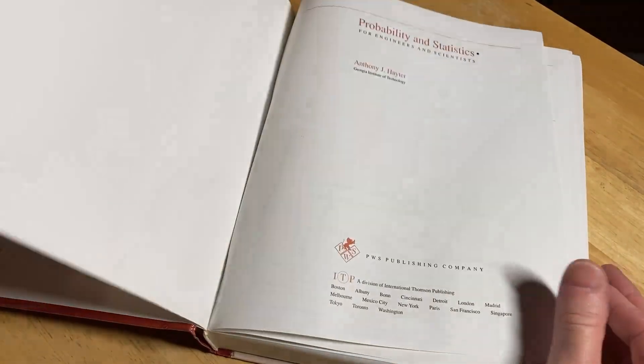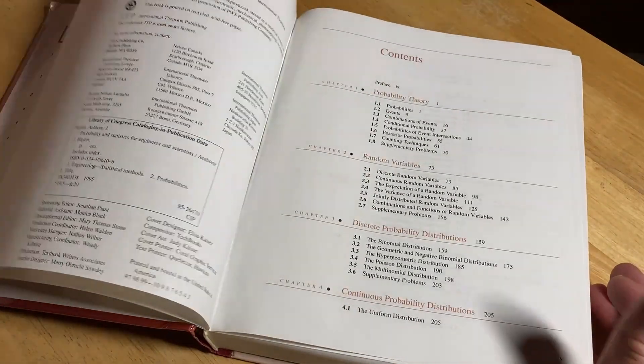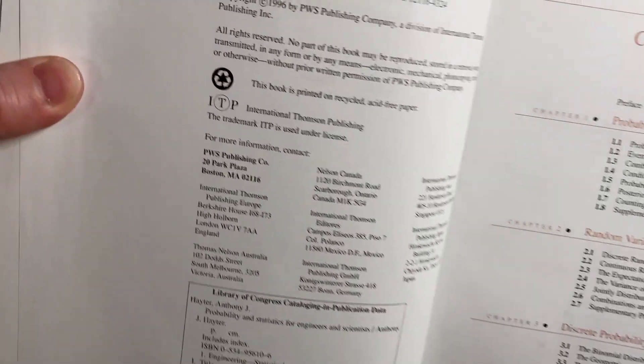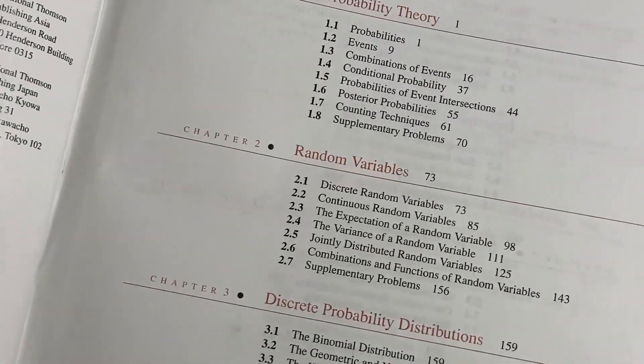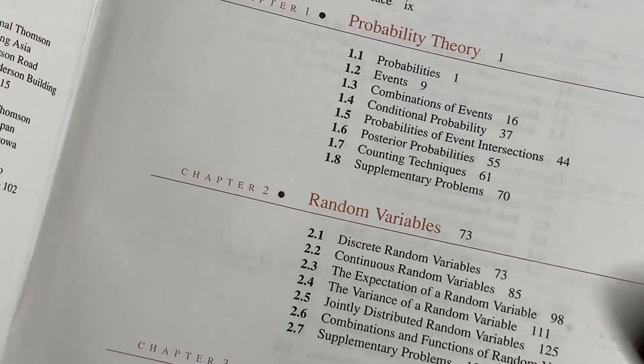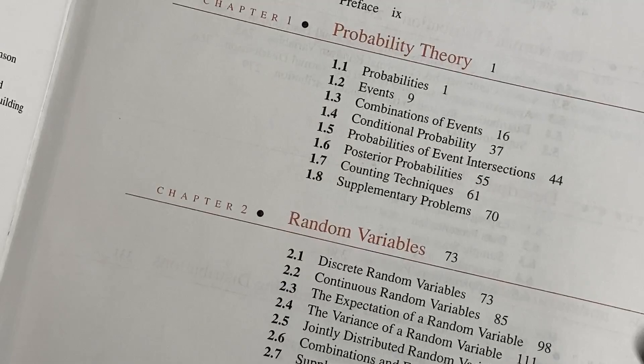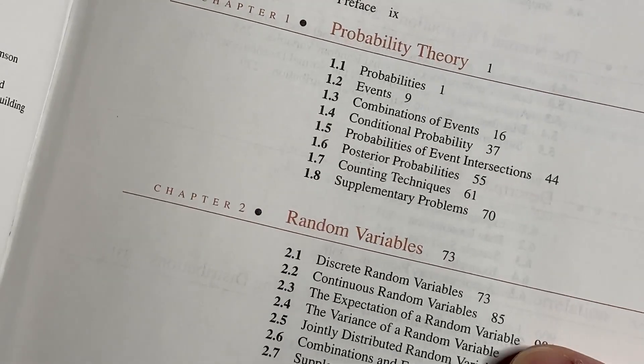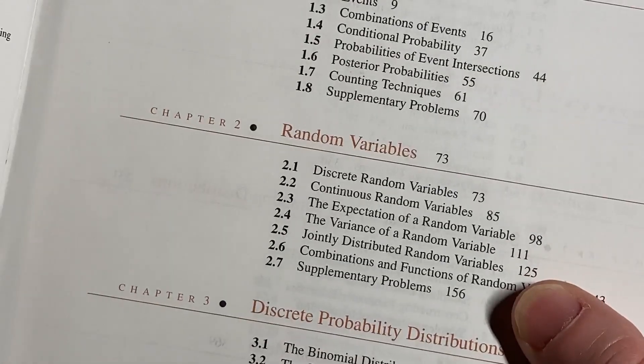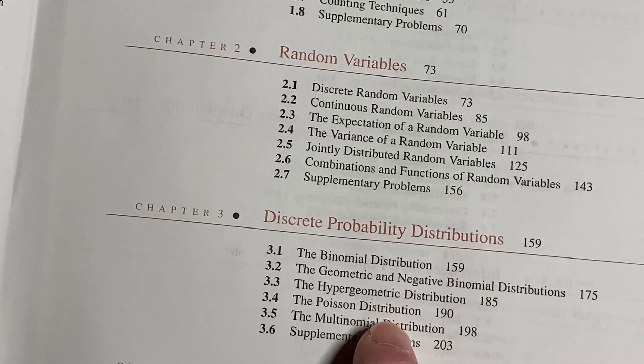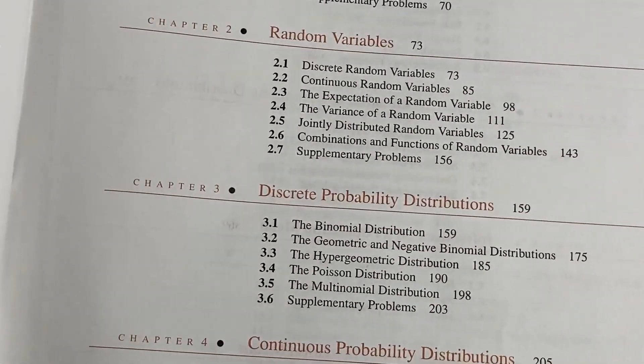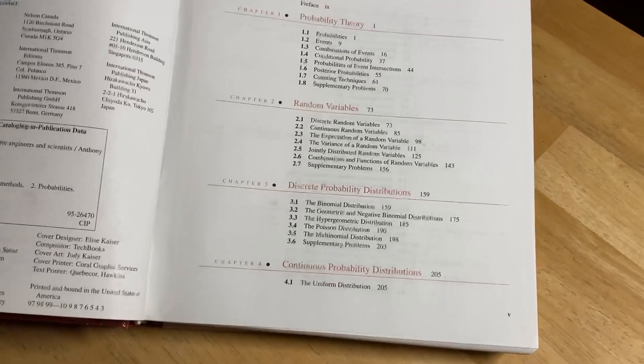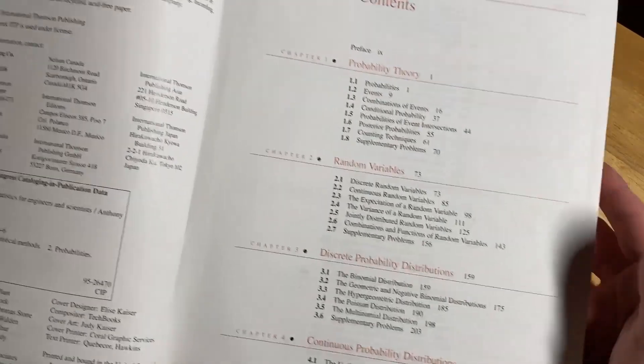This is from 1996, copyright 1996. Here are the contents of this book. We have probability theory, random variables, discrete probability distributions. These are things that you would learn if you were to use this book for a course or something like that.